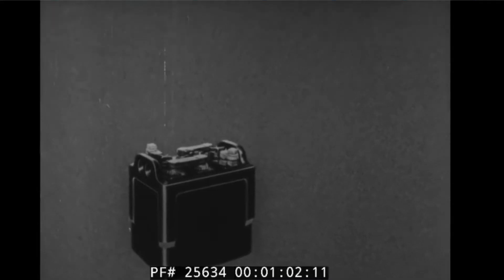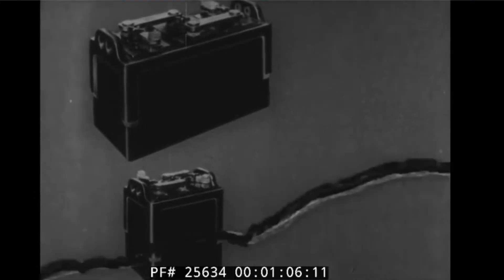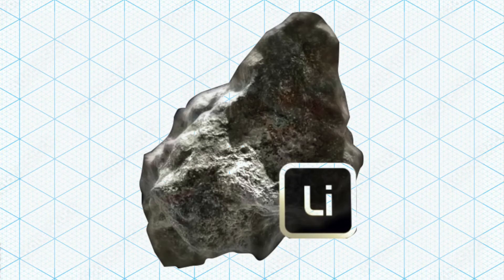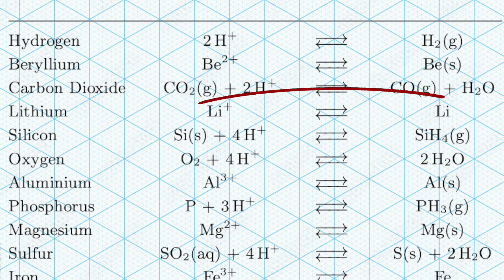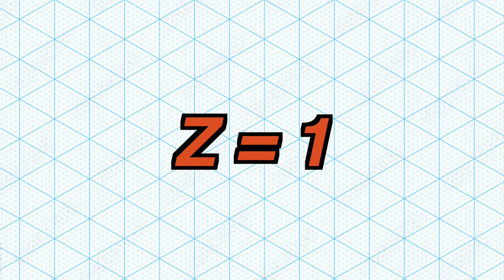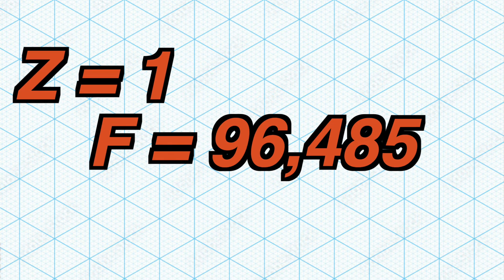To demonstrate, I'm going to calculate the specific capacity of the most common electrochemical cell we have today, which is lithium. Lithium has one electron that can be transferred in the redox reaction, so Z is equal to 1. The Faraday constant will always stay at 96,485.